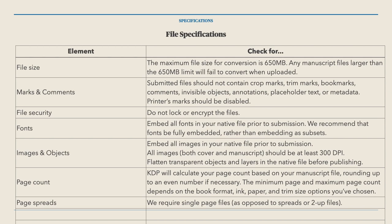Flatten transparent objects and layers in the file before publishing. If you've got an image with a transparent background, get rid of it — make sure it's a flattened object with no transparency. If KDP sees a transparent object in your file anywhere, they'll reject it. Go find it and redo it.